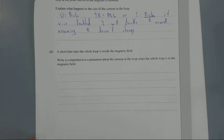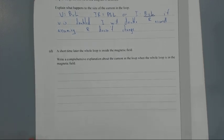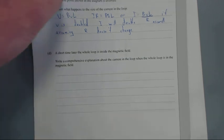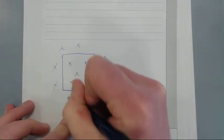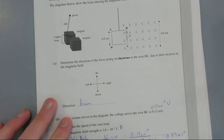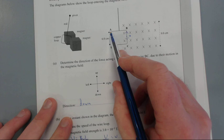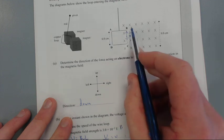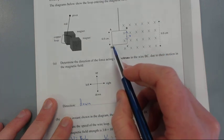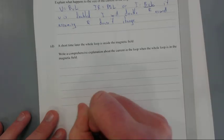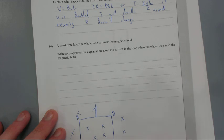Right. Short time later, the whole loop is inside the magnetic field. Write a comprehensive explanation about the current in the loop when the whole loop is in the magnetic field. Let's just draw that down here just so we can have something to reference. Here we go, here's our loop. And we put a whole lot of crosses everywhere. I'll chuck a whole lot of crosses and so on and so forth. Right, and that's our wire coming up. I better just check the labels. It goes A, B, C, D. There we go. It goes A, B, C, D. And my direction of the velocity is this way, so that's V.